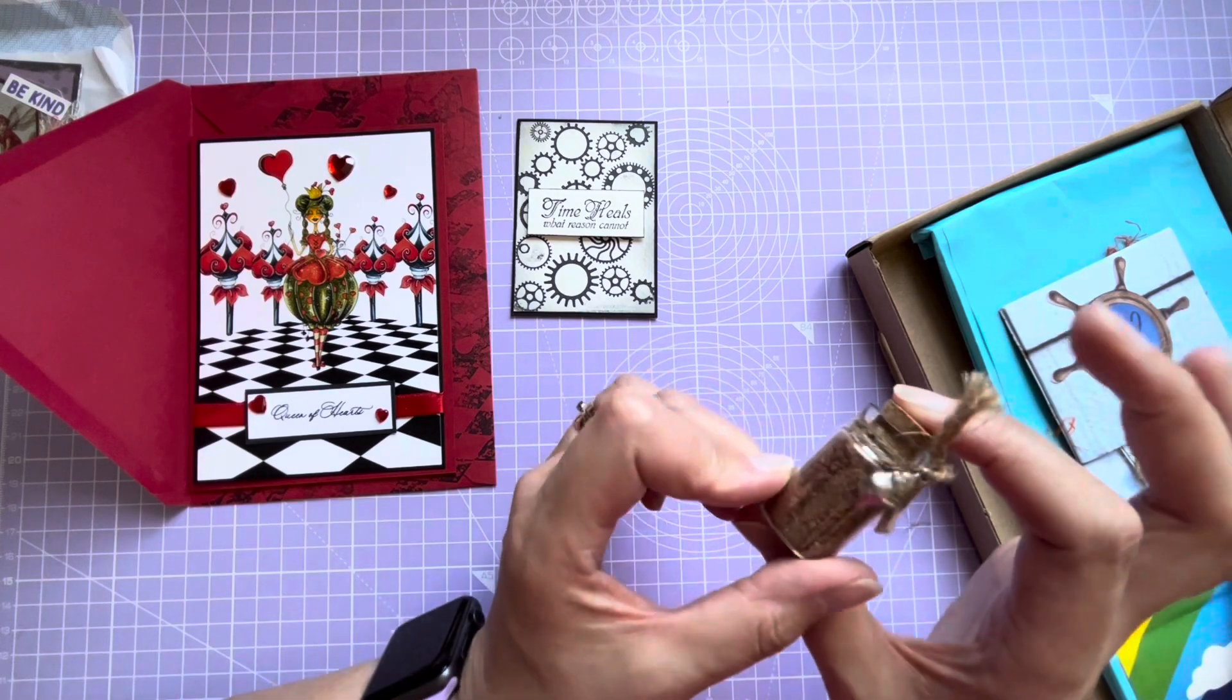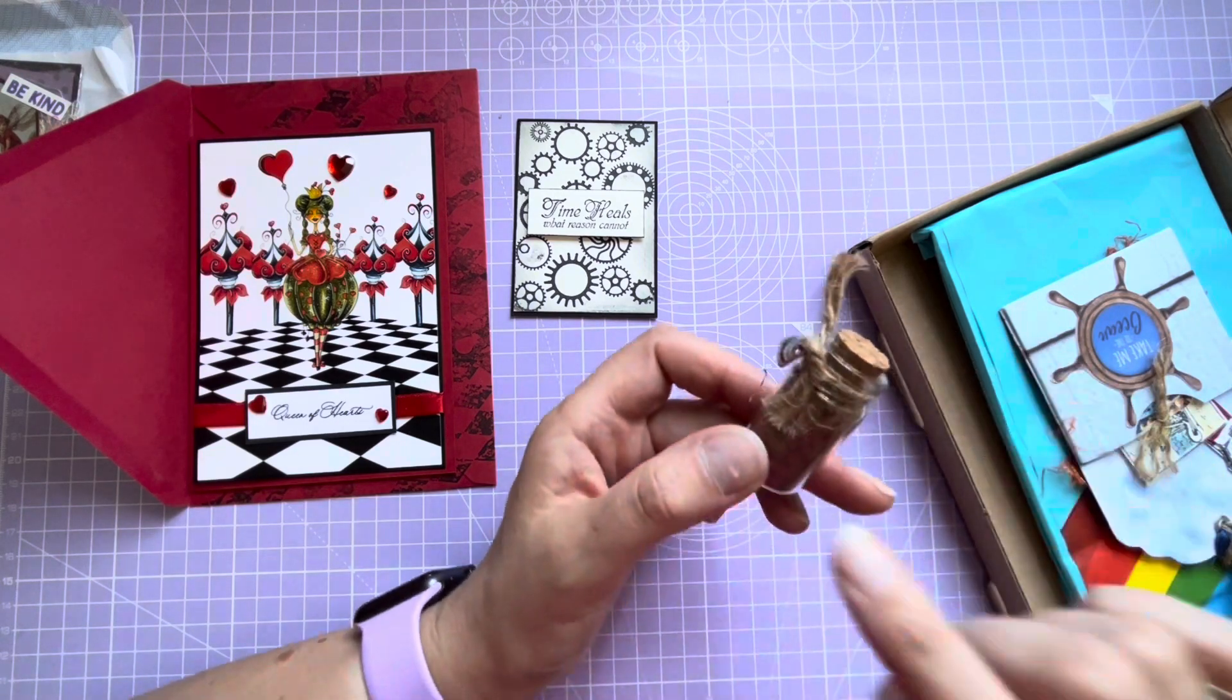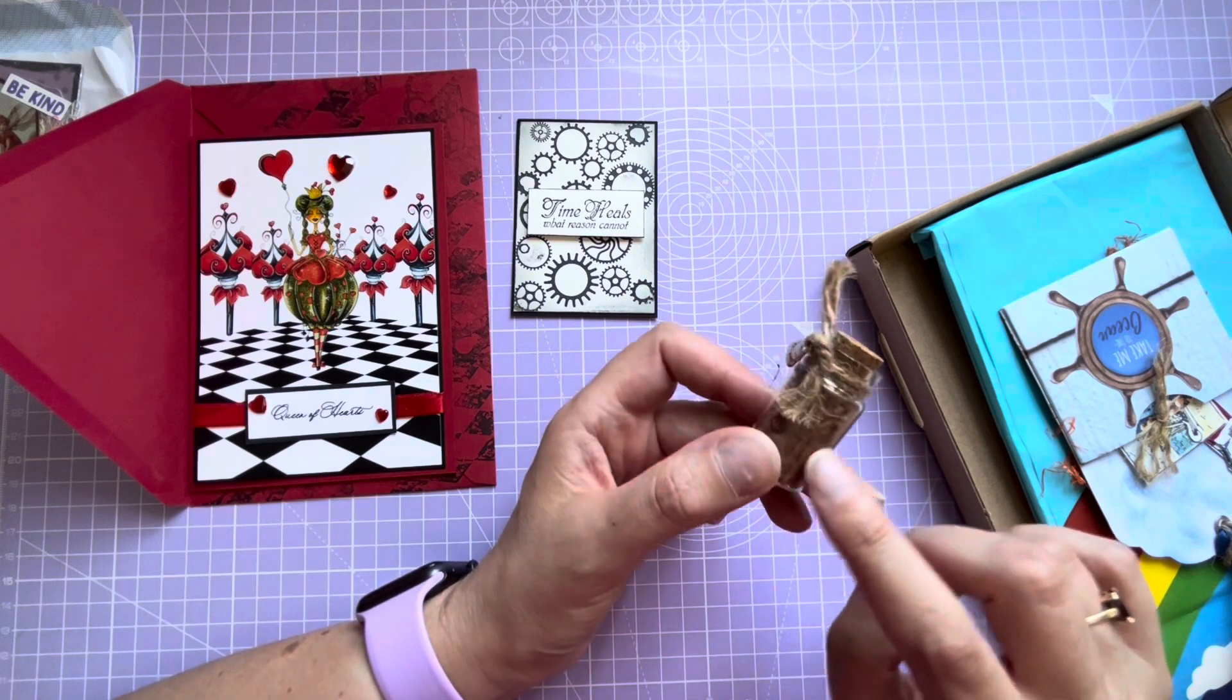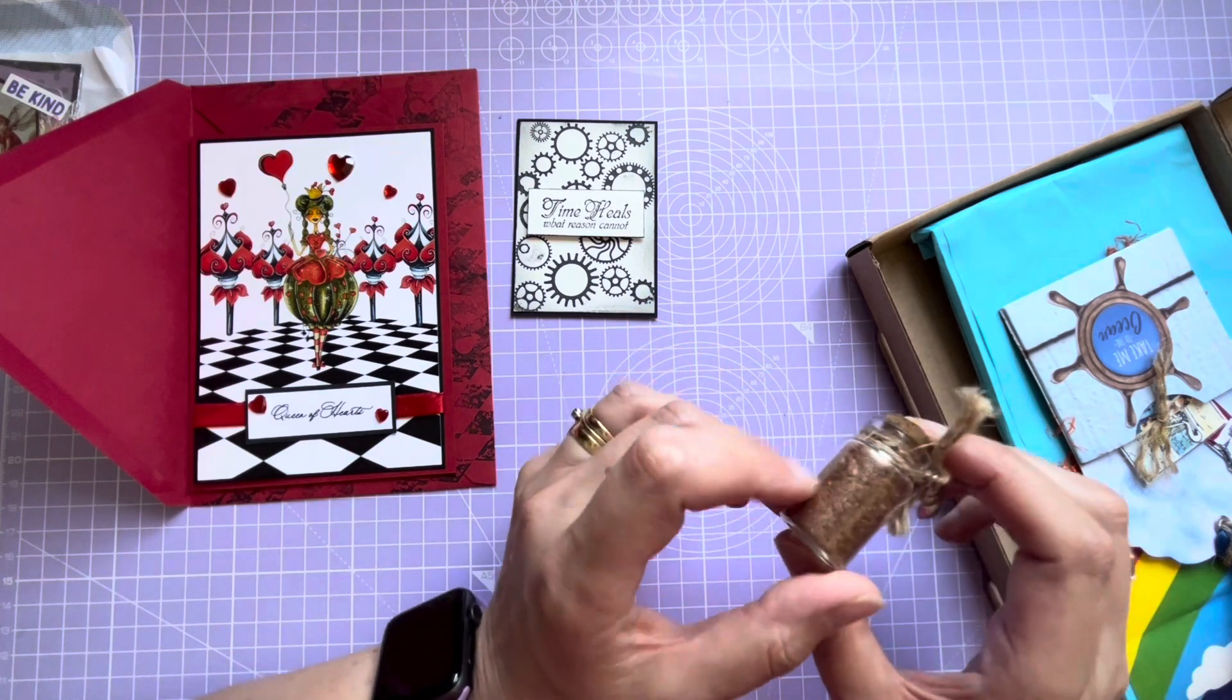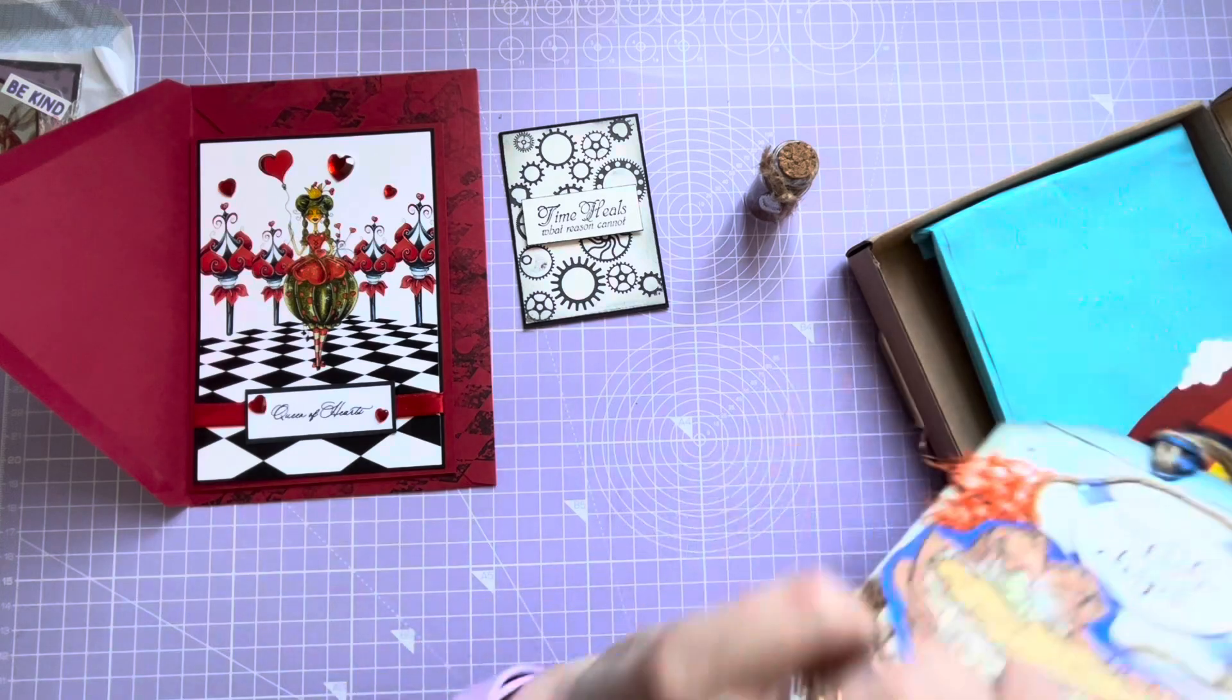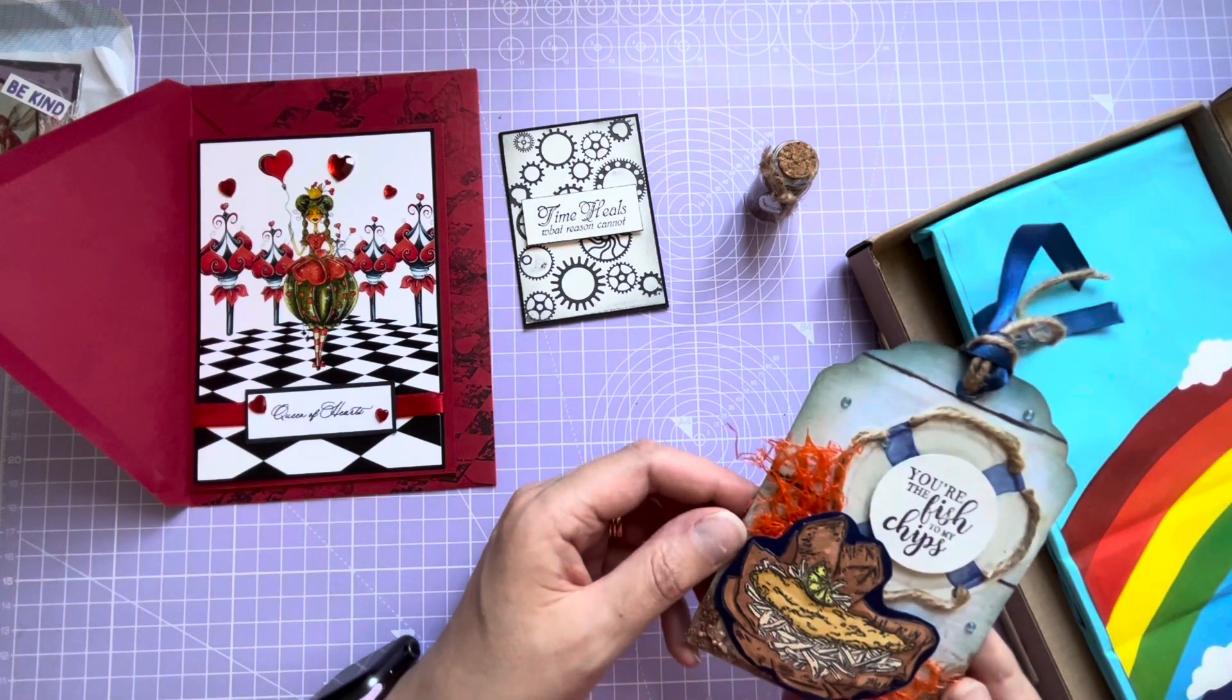I love these little jars - I've seen these in The Works. You can put all sorts in them, can't you? Put sequins and beads and perfect for things like that. And they've actually sent me the tag that they made in the challenge!